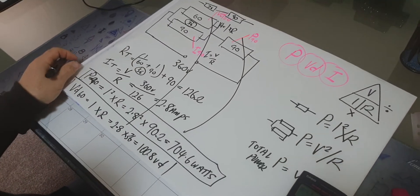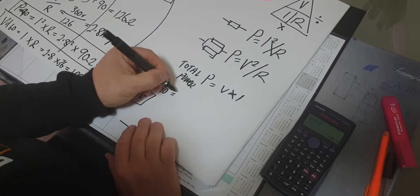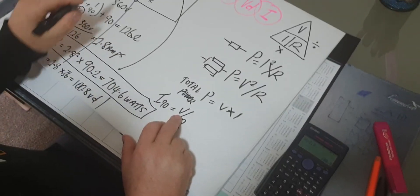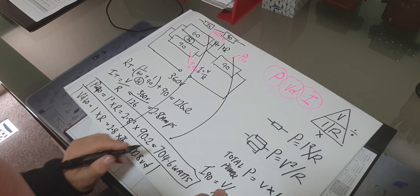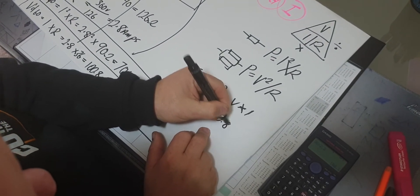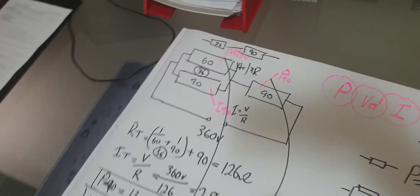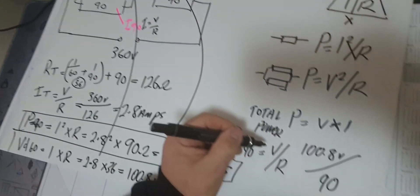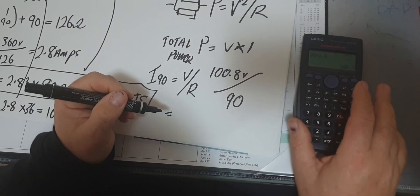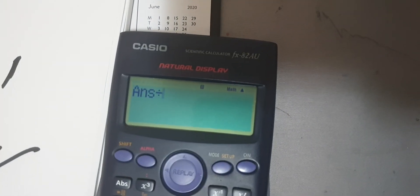The last thing to work out is I₉₀, the current through the 90-ohm parallel resistor. Using I equals V over R: the voltage drop is 100.8 volts divided by the 90-ohm resistance — so we put 100.8 divided by 90.